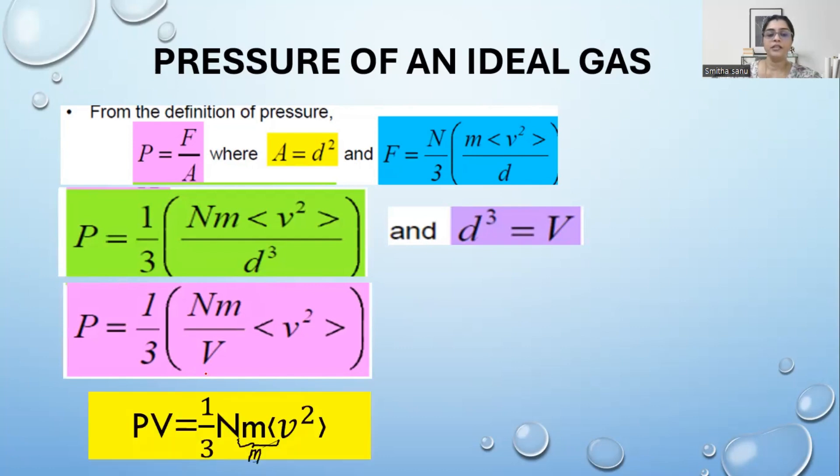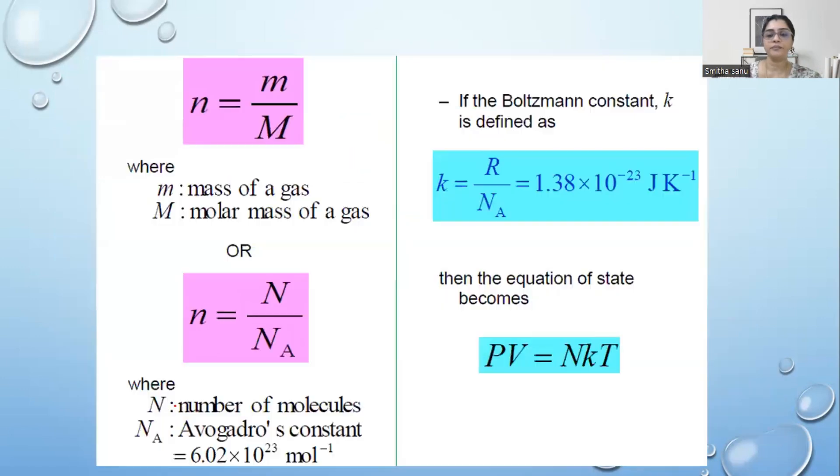If I retain the nm over V which is total mass over total volume, or shift V on the other side, if I retain nm over V then I know that mass over volume is density. So one of the important forms of pressure is 1/3 ρ times the average velocity square. We have other equations which you need to know: number of moles n equals mass over molar mass, n also equals number of molecules over Avogadro's number, and the ratio of universal gas constant over Avogadro's number is Boltzmann's constant.